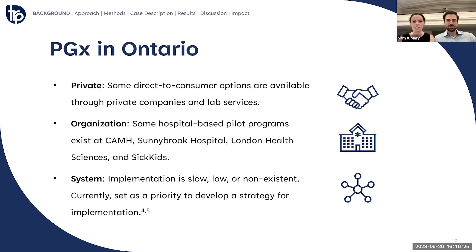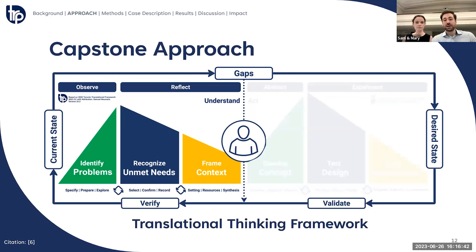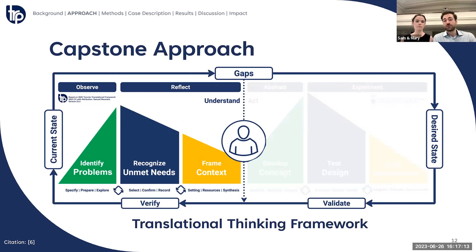But the government here has set PGX as a priority topic to be investigated further. To further understand the current state of PGX in Ontario, we used the adapted translational thinking framework to help guide us towards a research question. For our project, we focused on the first half of the framework, the understand stage, and went through several iterative cycles at different times throughout our capstone. Beginning with identifying problems in the PGX space, we spoke with stakeholders in industry, research, and clinical care to really understand the field. Once we understood the PGX landscape, we set out to recognize unmet needs. There was a clear gap in system-level implementation and an unmet need to understand how strategies are developed to translate PGX testing into routine clinical practice.